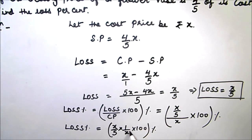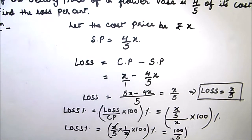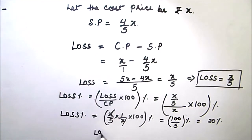The two x's get cancelled. So we are left with 100 by 5 percent which equals 20 percent. So loss percent is 20 percent.